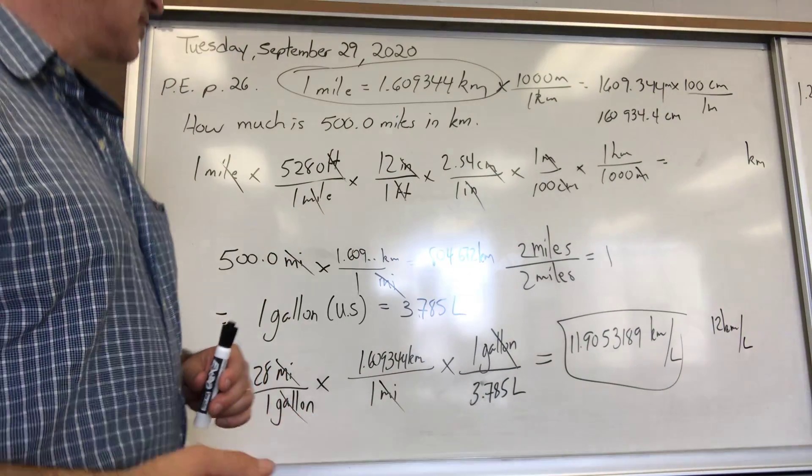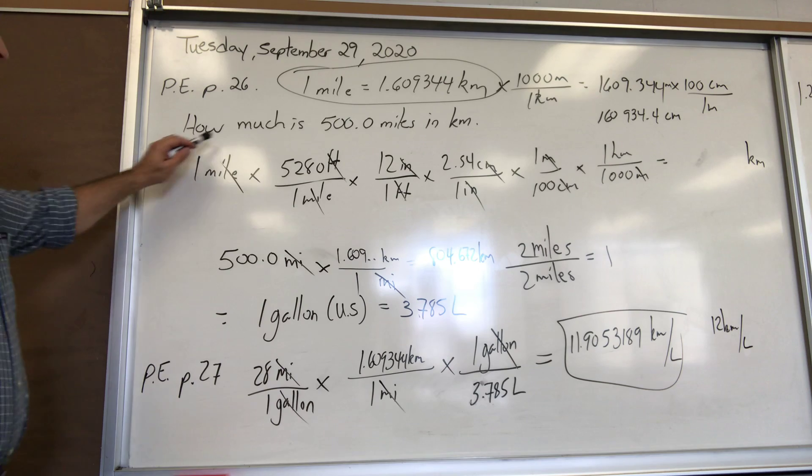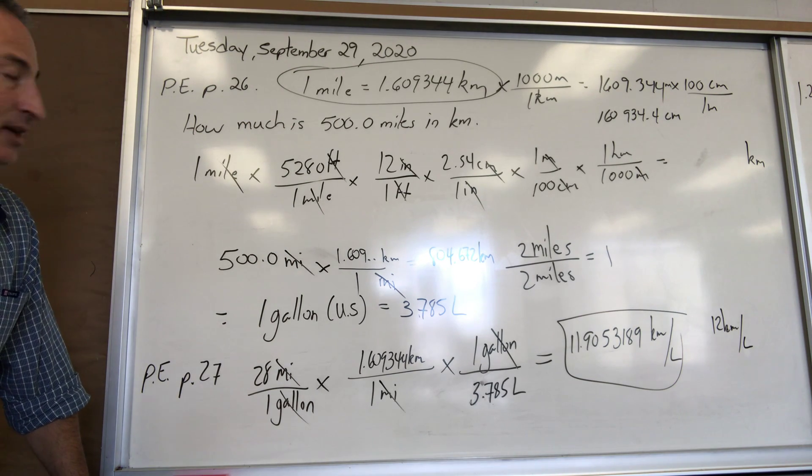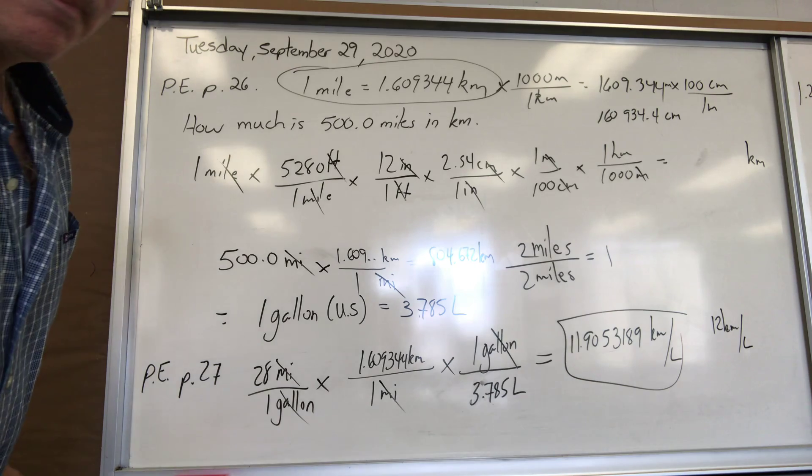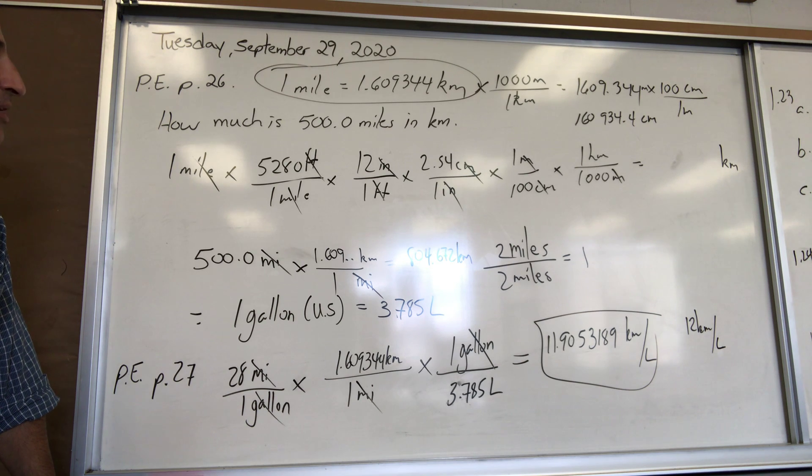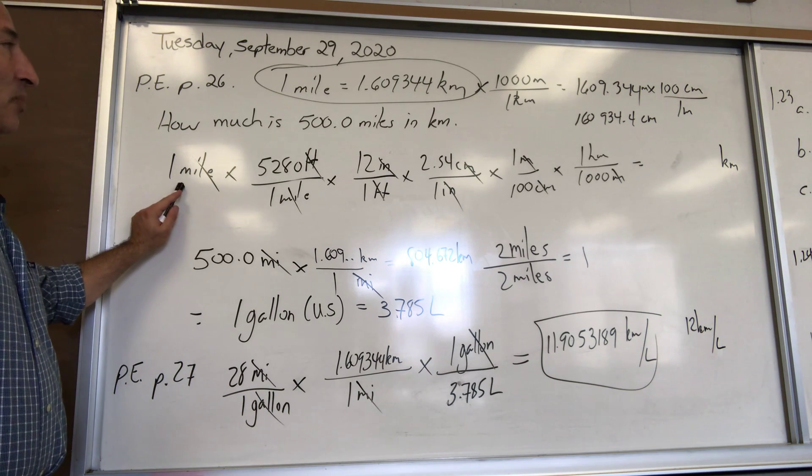They ask you in the text to convert 500 miles into kilometers on page 26, which you're going to get on Monday. The conversion factor for one mile into kilometers is 1.609344 kilometers. You might ask yourself how do I know it so accurately? I've done it so many times it's burned into my memory, but I'll show you how I did the calculation.